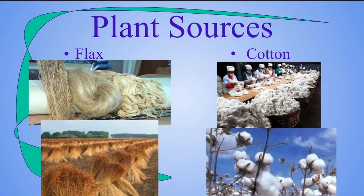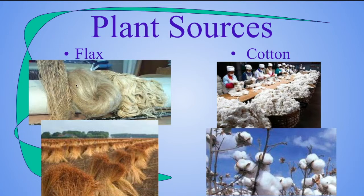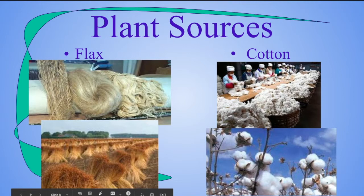Our plant sources are flax — a reed-like looking plant that, if we take off the outer shell, ends up being all these soft strands inside. And cotton, which is the fluffy part of the cotton flower on the cotton plant, that we can then take those short fluffy pieces and turn them into fabric as well.